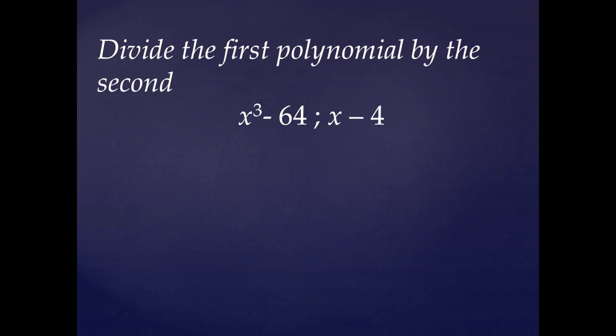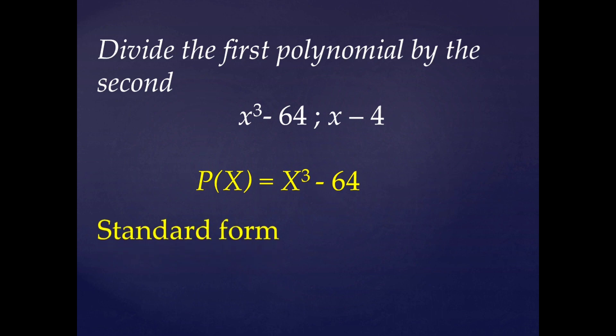Let us consider the example: divide the first polynomial by the second. The first polynomial is x³ - 64 and we have to divide it by x - 4. Firstly, we will name this polynomial as p(x) = x³ - 64. As we can see here, this polynomial is not in the standard form.